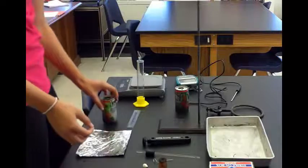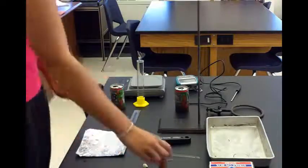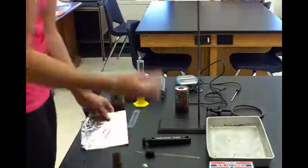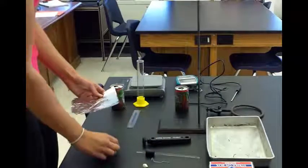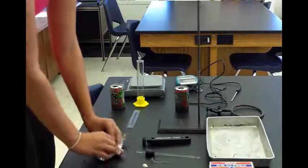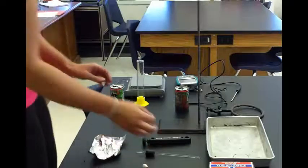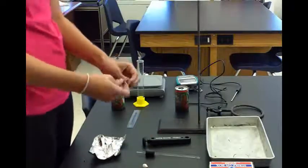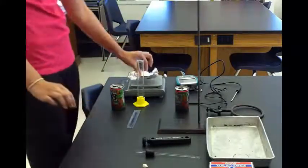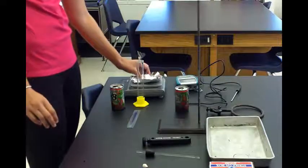Now you're going to put your food holder together. After recording the weight of your can, take your cork, foil, and paper clip. Put the cork down on the table, then push the foil around it. This makes a food holder so that if your food drops, it can catch it. Then take your paper clip and stick it in the top.